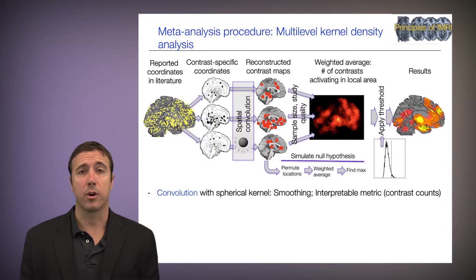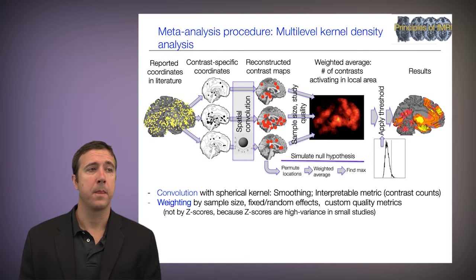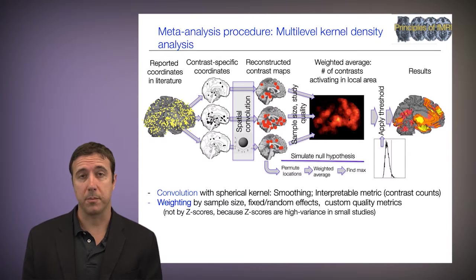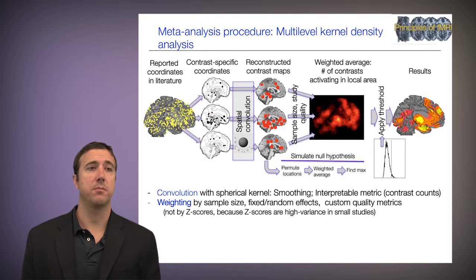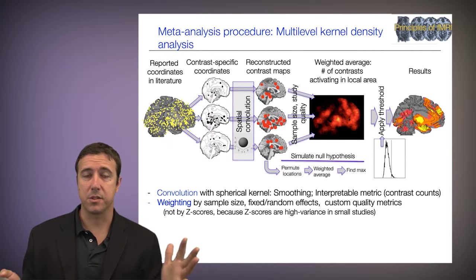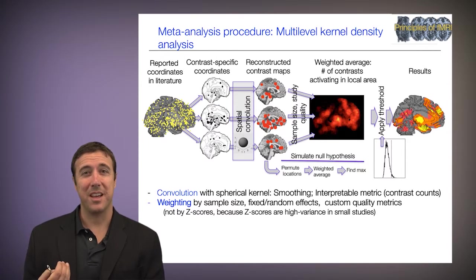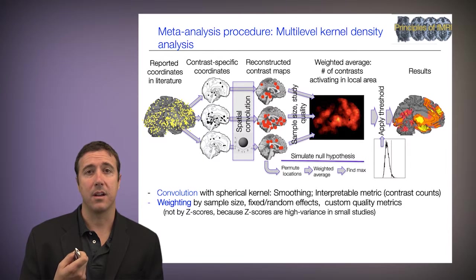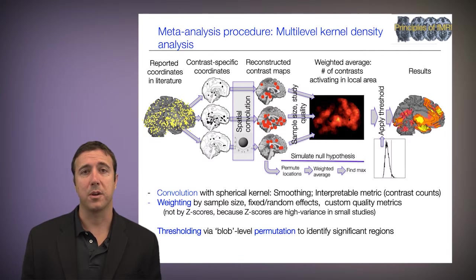The convolution with a spherical kernel is a smoothing kernel, giving us an interpretable metric: how many contrasts or studies activated in a local region. We weight by the square root of the sample size, by whether it's a fixed or random effect study, and other custom quality metrics are possible. We don't weight by z-scores, because z-scores are high variance — the smaller the study, the more likely you'll find high z-scores by chance — so you'd be weighting by exactly the wrong thing.